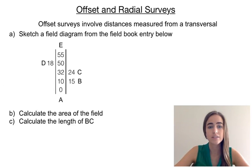In our example it asks us to sketch a field diagram from the field book entry below. So we've got these letters here, we've got A, B, C, D and E. We know that our field is 55 metres long in total.